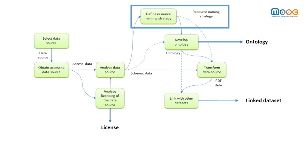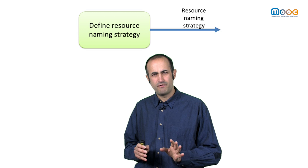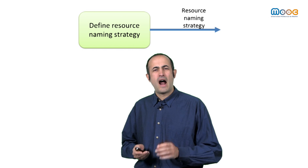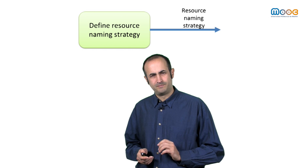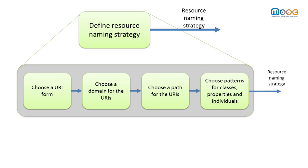Returning to our process, what do we have to do to define our resource naming strategy? The steps to follow are the following: first, to choose our URI form, that is, if we are going to use either hash or slash URIs.